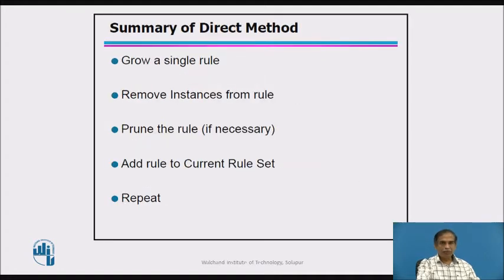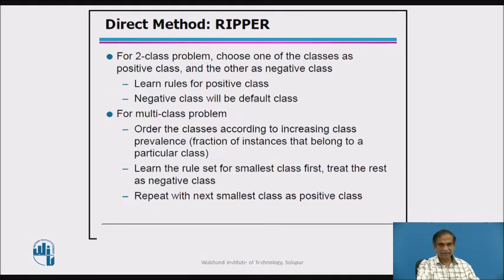A summary of direct methods: grow a single rule, remove instances, prune the rule, and if necessary add rules to the current rule set. Repeat this procedure until you get the best rule that represents the data set.